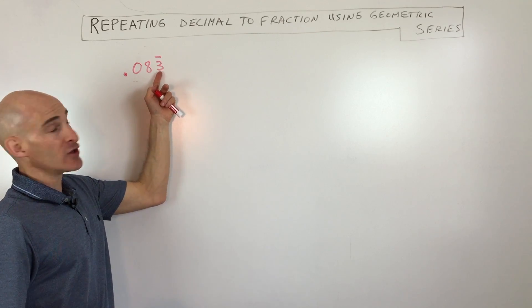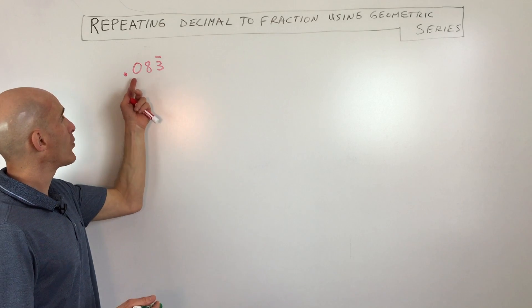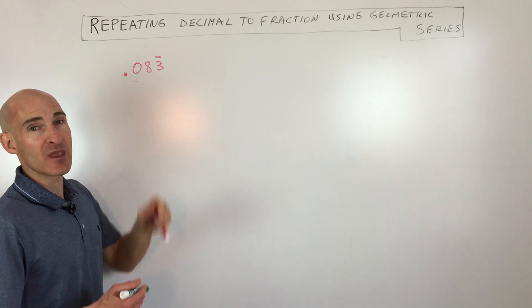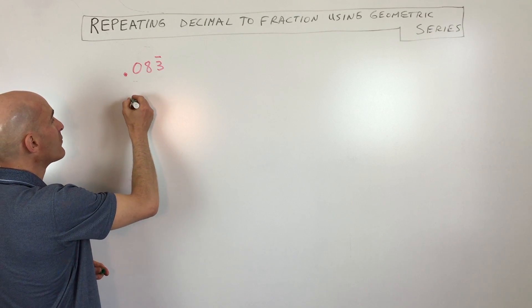0.083 repeating. Notice it's just the three that's repeating. What students sometimes get confused by is what do I do with the 0.08? So what you want to do is separate out the 0.08 for a moment.